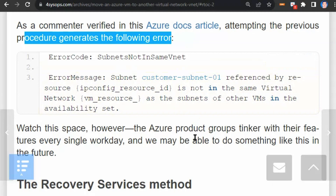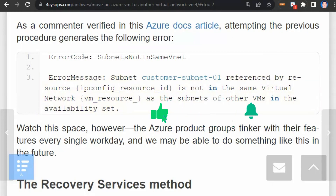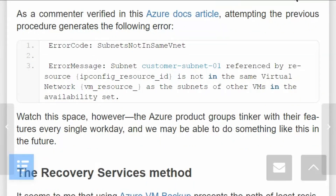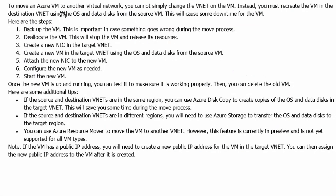Therefore, it is recommended to redeploy the new virtual machine in the new virtual network. To move an Azure virtual machine to another virtual network, you cannot simply change the VNet on a VM. Instead, you must recreate the VM in the destination VNet using the OS and data disk from the source virtual machine. This will cause some downtime for the virtual machine.